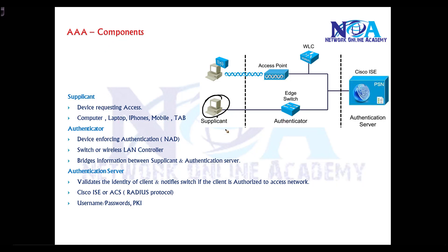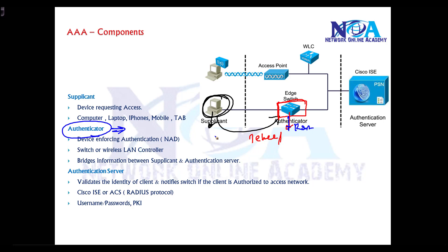Once the device used by the end user is a Supplicant, the device he is trying to access — maybe a switch or router — is called the Authenticator. In case of device administration, he is trying to log into the router or switch. In case of network access, this device can be a wireless access point or wireless controller, because he is connecting through a Wi-Fi network before gaining access to the network.